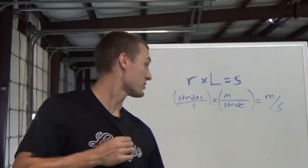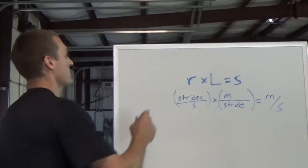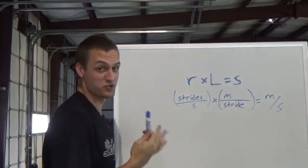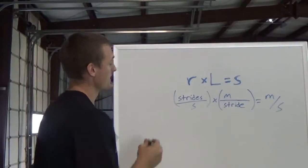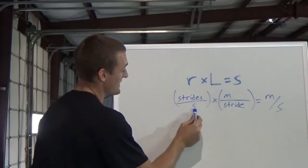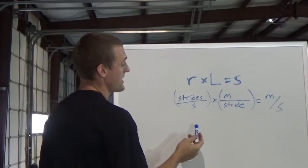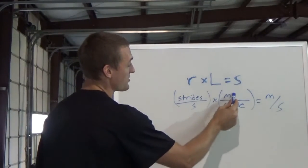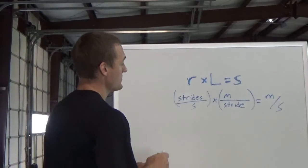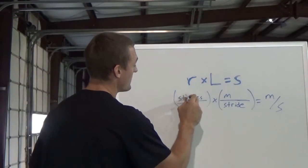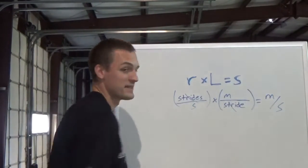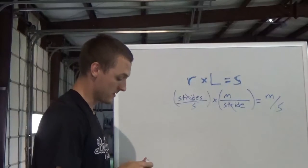It's a simple equation. Your rate times your length equals your speed. That's true because your rate is strides per second. If you multiply that by meters per stride — your length — you get meters per second. That's your speed.